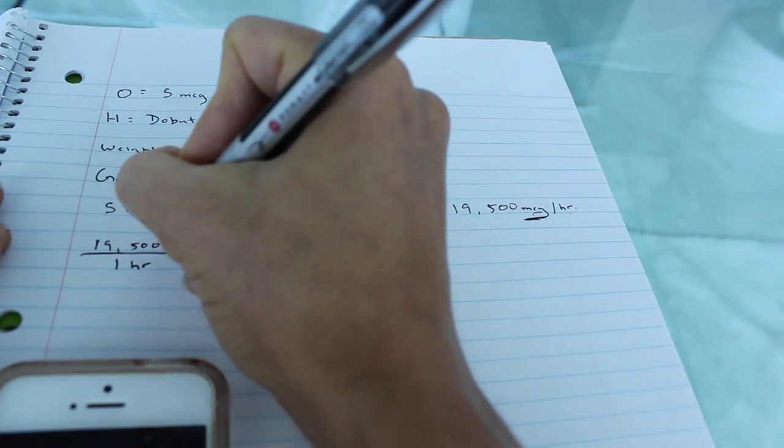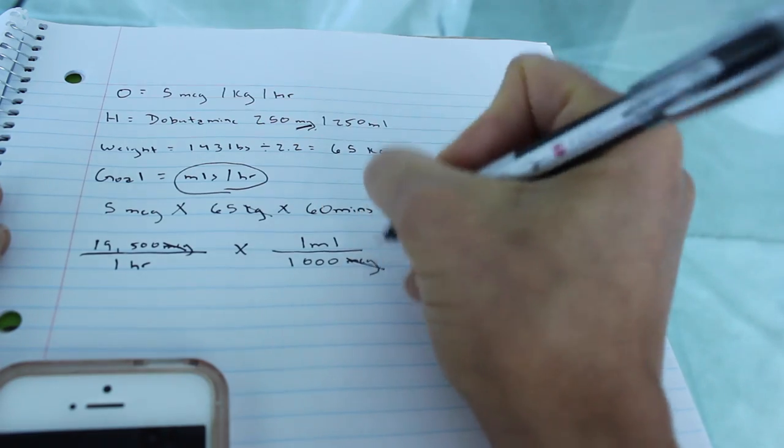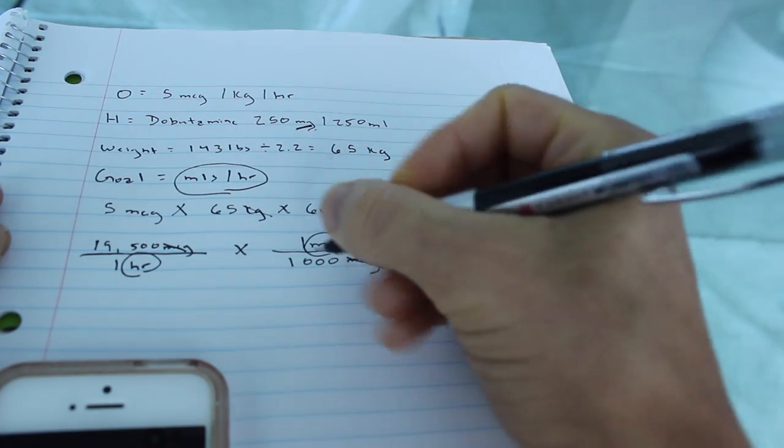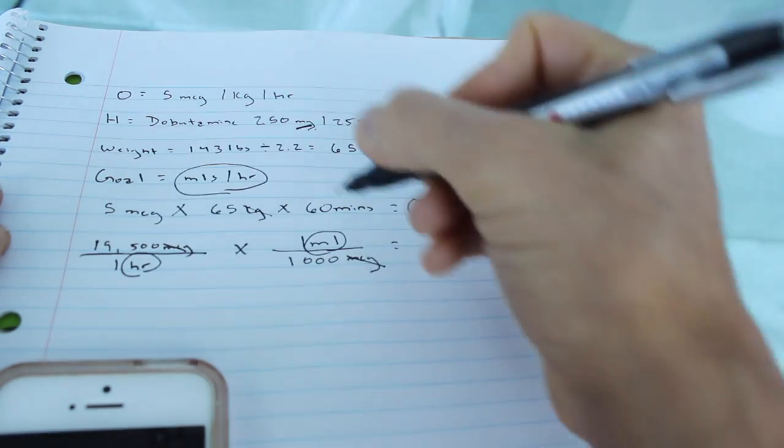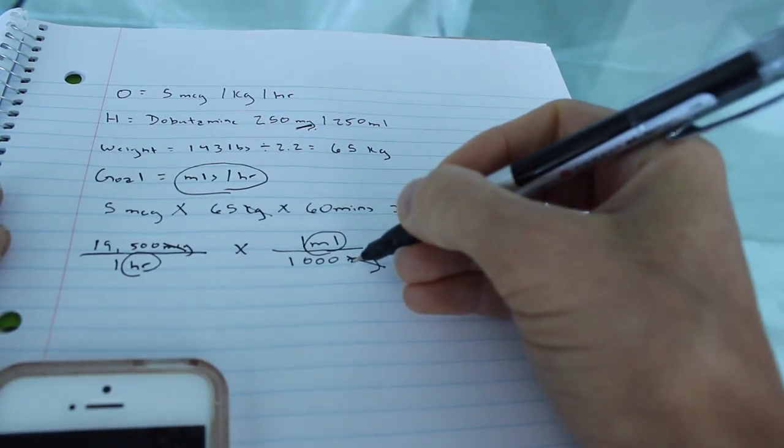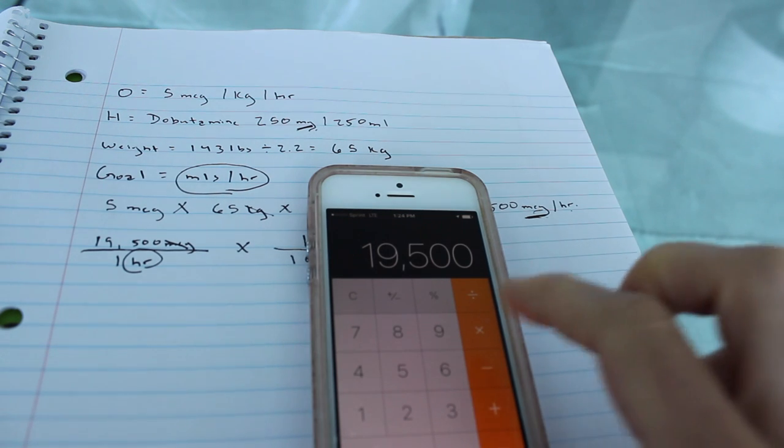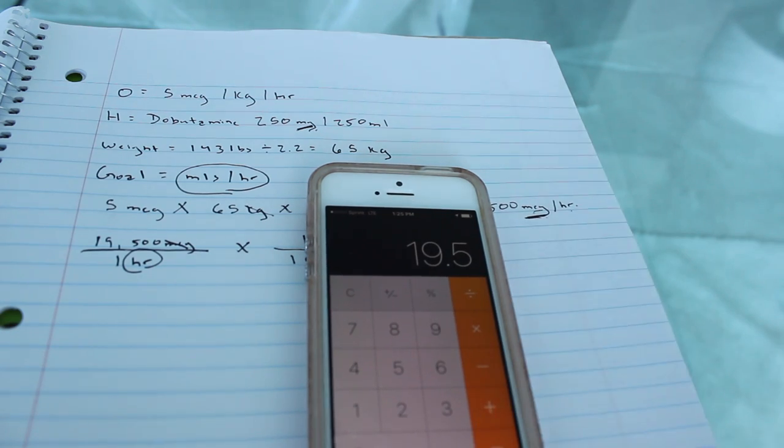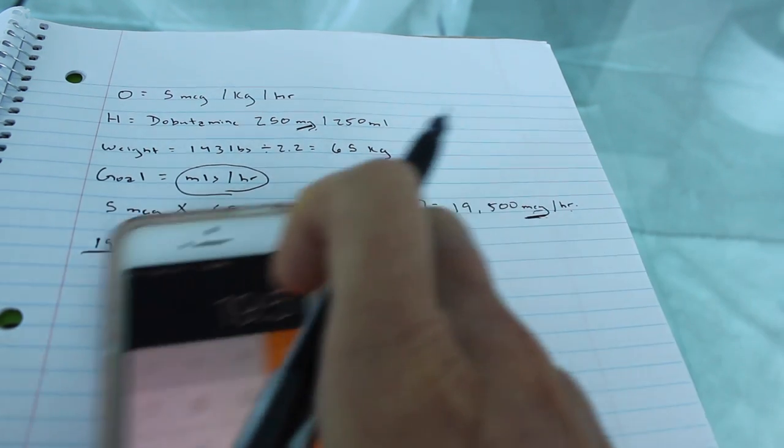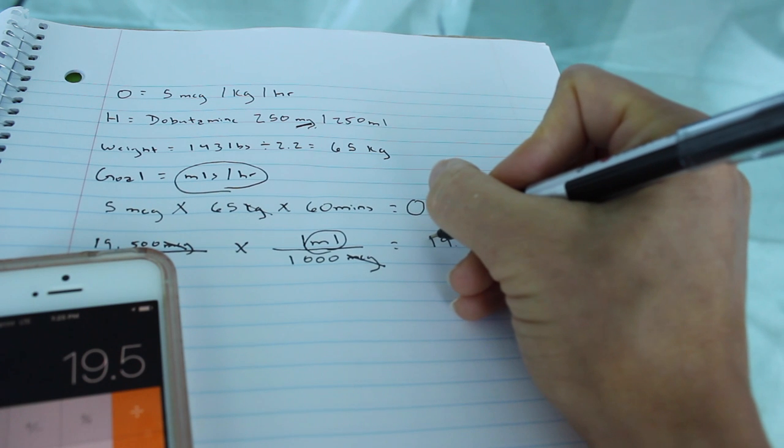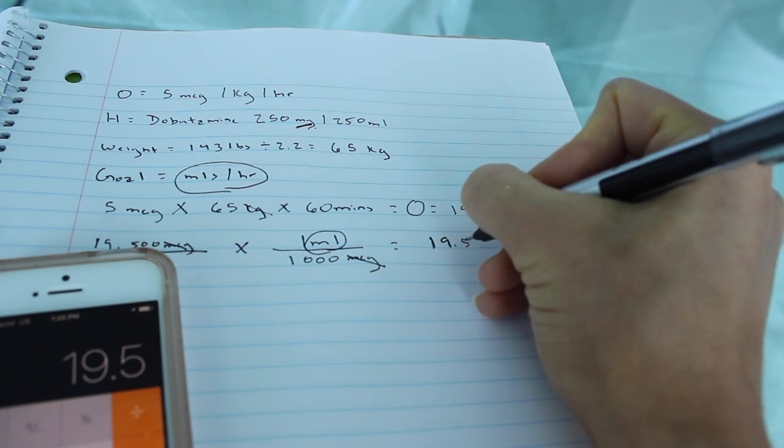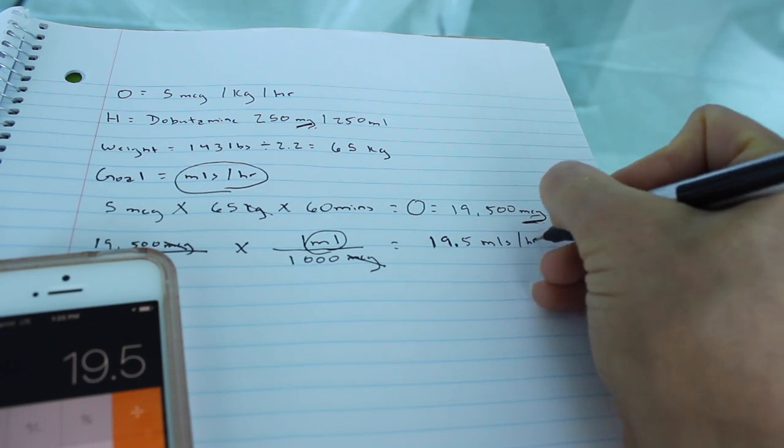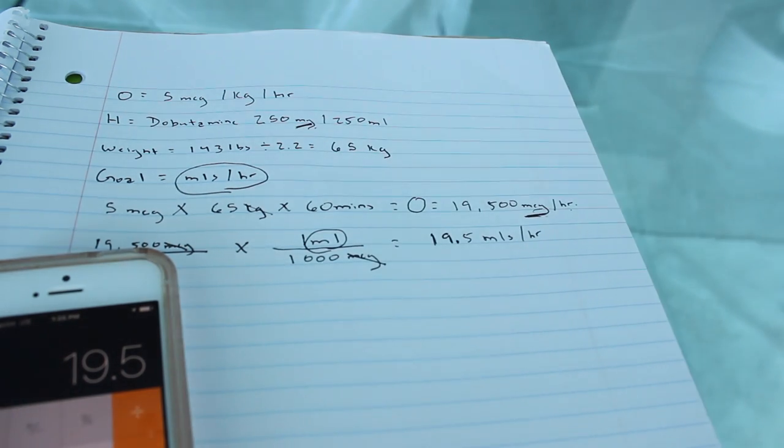So right here, I'm able to cross off these. And then what do I have left? mLs per hour, which is what I want. So then once you divide 19,500 by 1,000, you might not need a calculator for that, you're going to get 19.5. And then what is it going to be? 19.5 mLs per hour, which was our goal. So that is our answer.